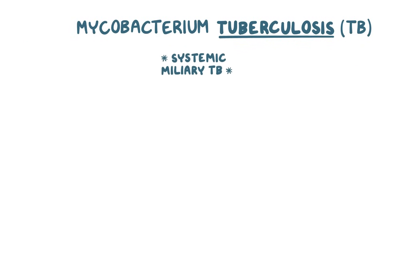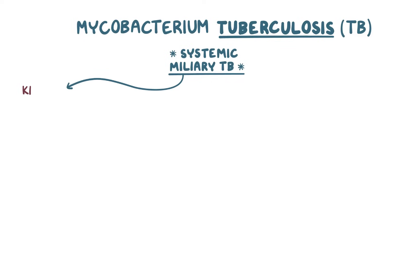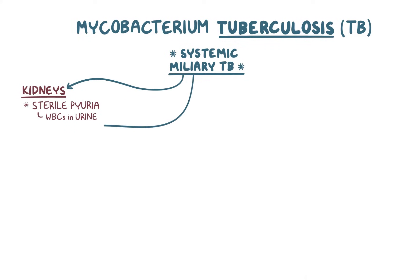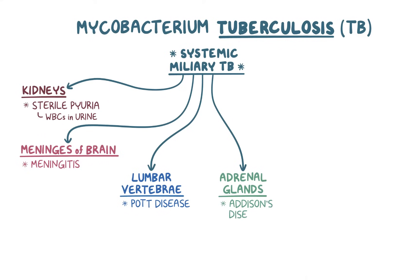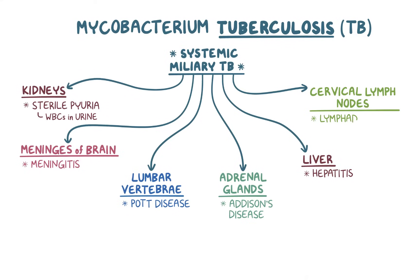When TB spreads to other tissues, it causes complications related to the organ affected. Kidneys are commonly affected, resulting in sterile pyuria, or high levels of white blood cells in the urine. It might also spread to the meninges of the brain causing meningitis, the lumbar vertebrae causing Pott's disease, the adrenal glands causing Addison's disease, the liver causing hepatitis, and the cervical lymph nodes causing lymphadenitis in the neck, also known as scrofula.